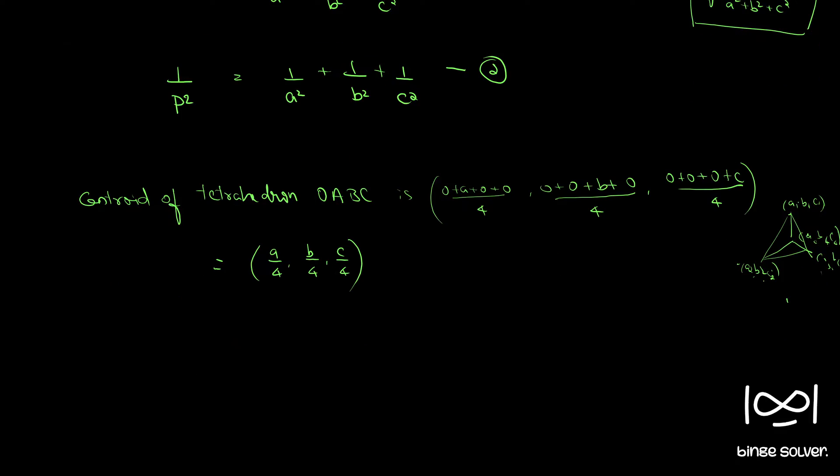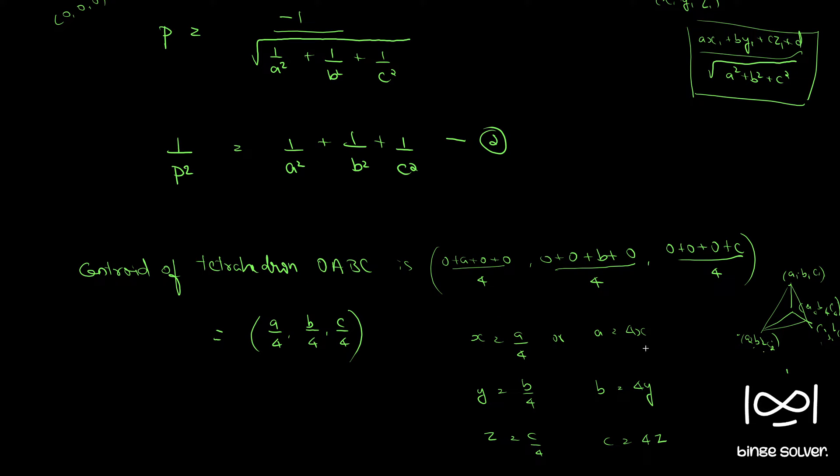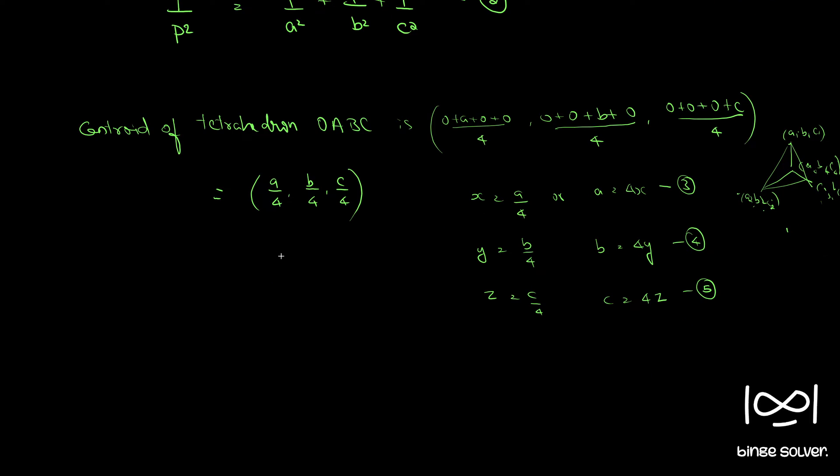Now we want to find the locus of this point. So x is equal to a by 4 and y equal to b by 4 and z is equal to c by 4. We can write a is equal to 4x, b equal to 4y and c is equal to 4z. Now we can use this relationship equation 2 and these three to find the relation between x, y, z eliminating all other variables.